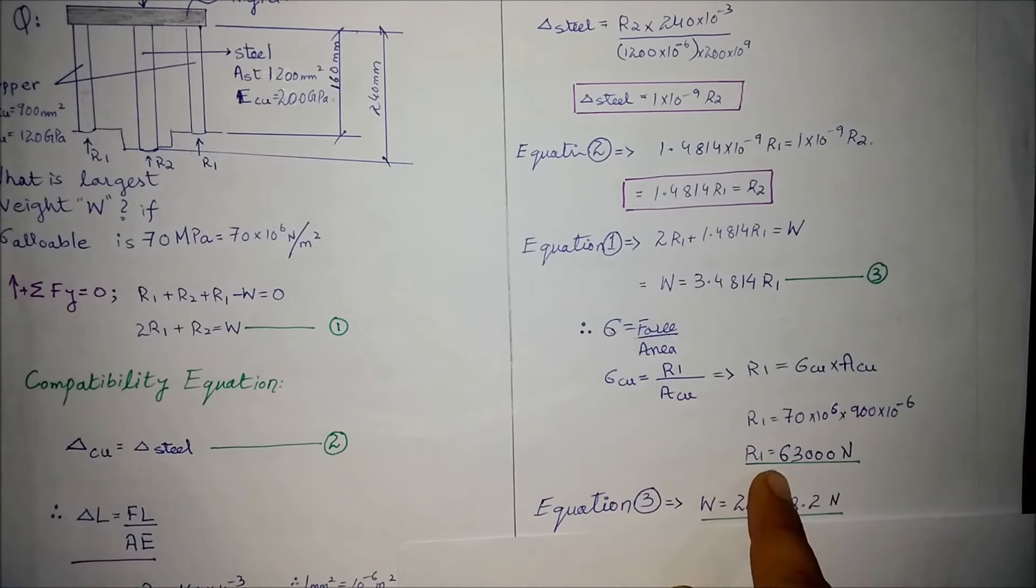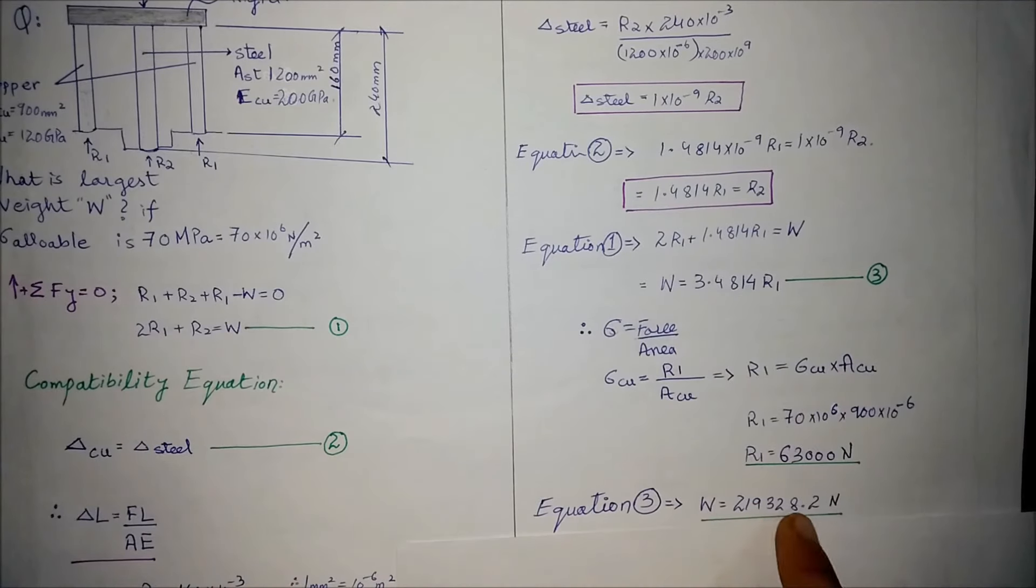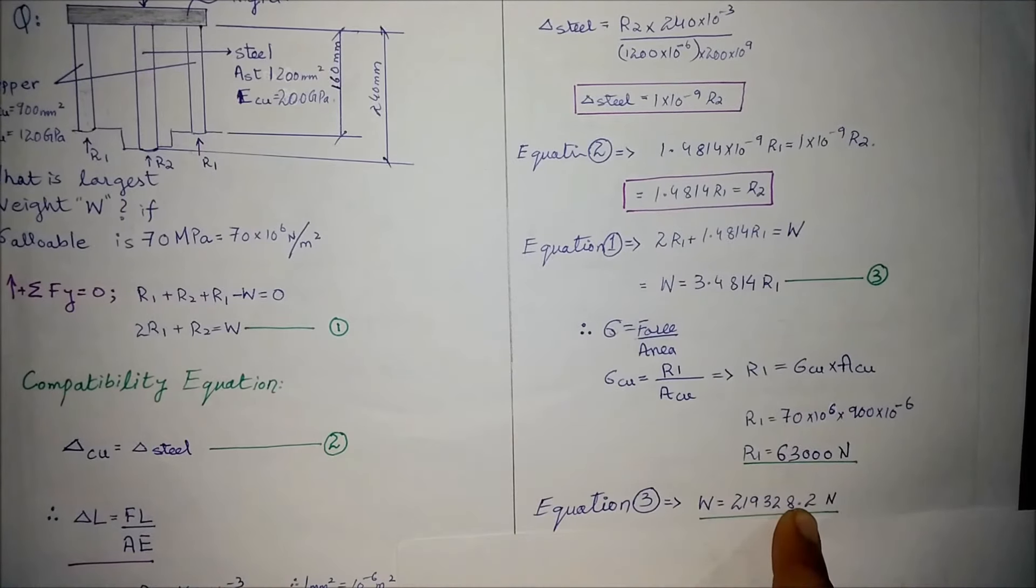We can find out the weight from the equation. We have found R1 already. Substituting the value of R1 in this equation we find out the value of maximum weight that can be supported by the pile.